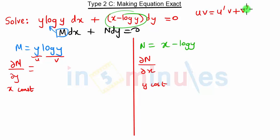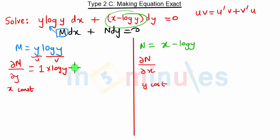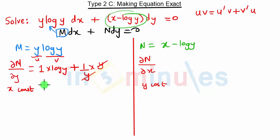Here u is y and v is log(y). Derivative of y is 1, times log(y), plus y times derivative of log(y) which is 1/y. The y terms cancel, giving us log(y) plus 1. So ∂M/∂y = log(y) + 1.